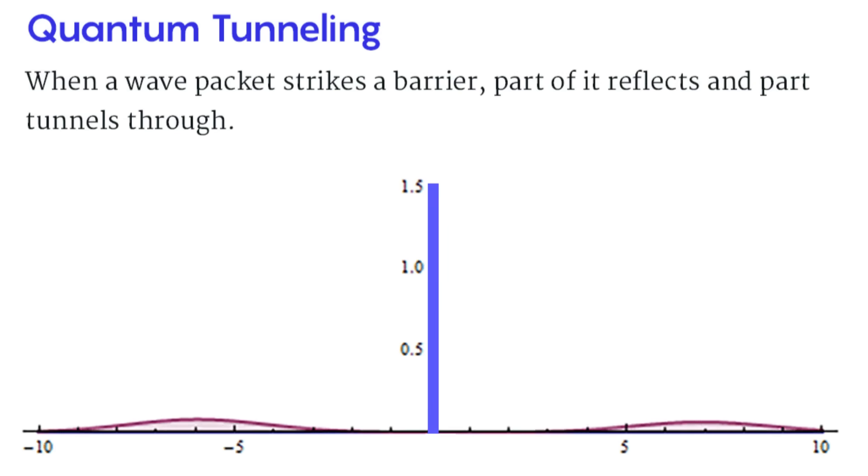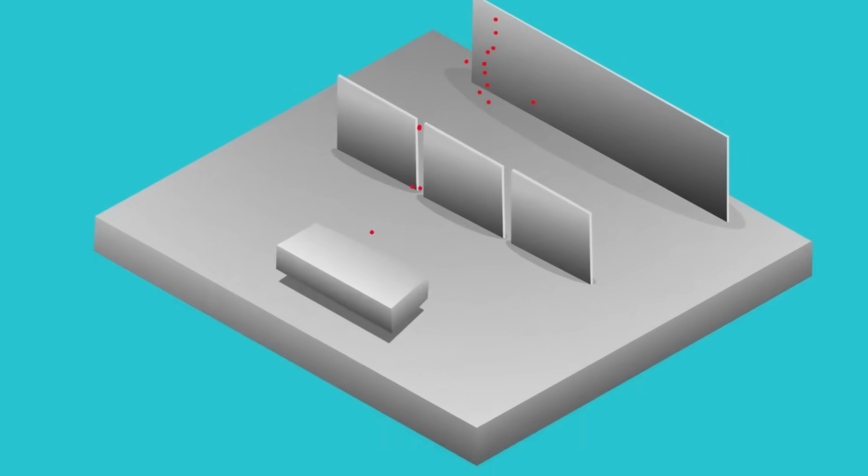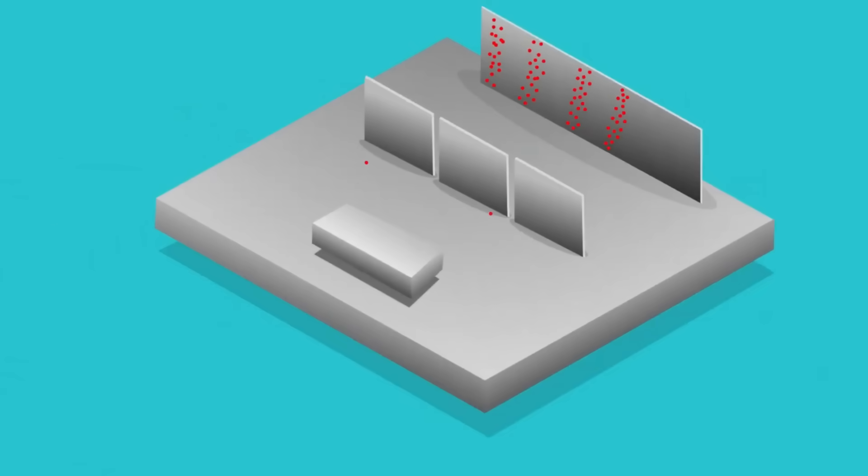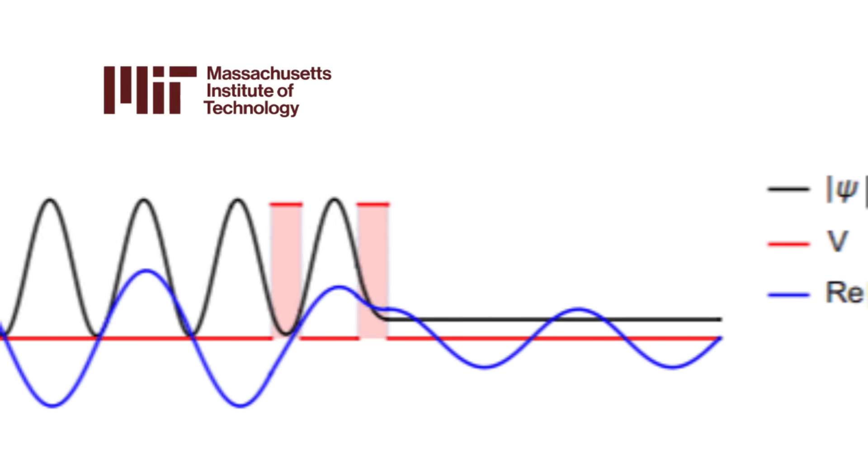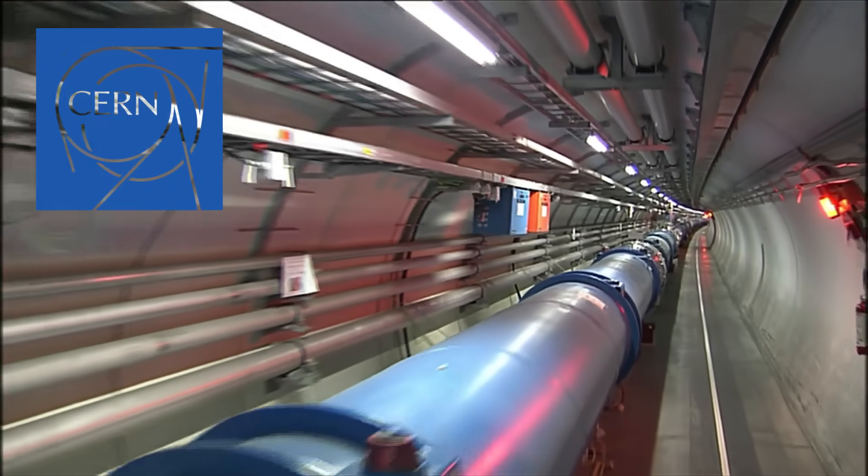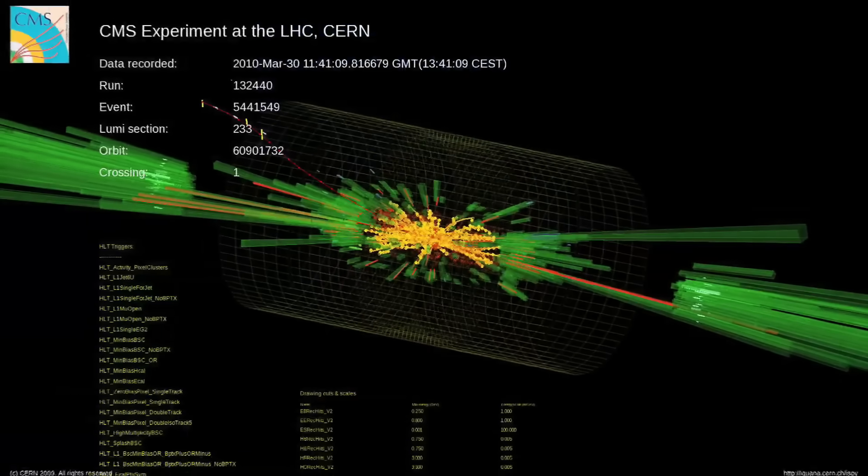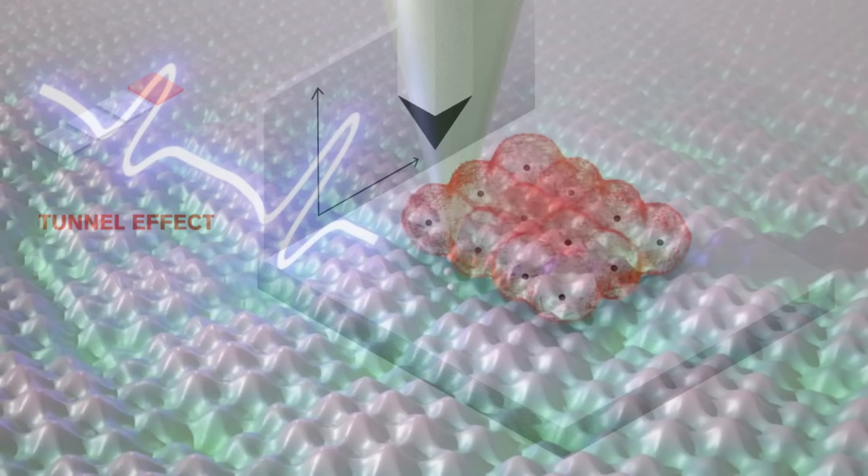The data shows a clear correlation between the tunneling effect and previously unexplained fluctuations in quantum field measurements that have puzzled physicists for decades. Comparative data from previous experiments at MIT and Caltech shows why their attempts failed to achieve similar results. The CERN team's innovation wasn't just in the equipment design, but in their approach to creating what they call a coherence bubble, a protected space where quantum effects can manifest at larger scales without decoherence.